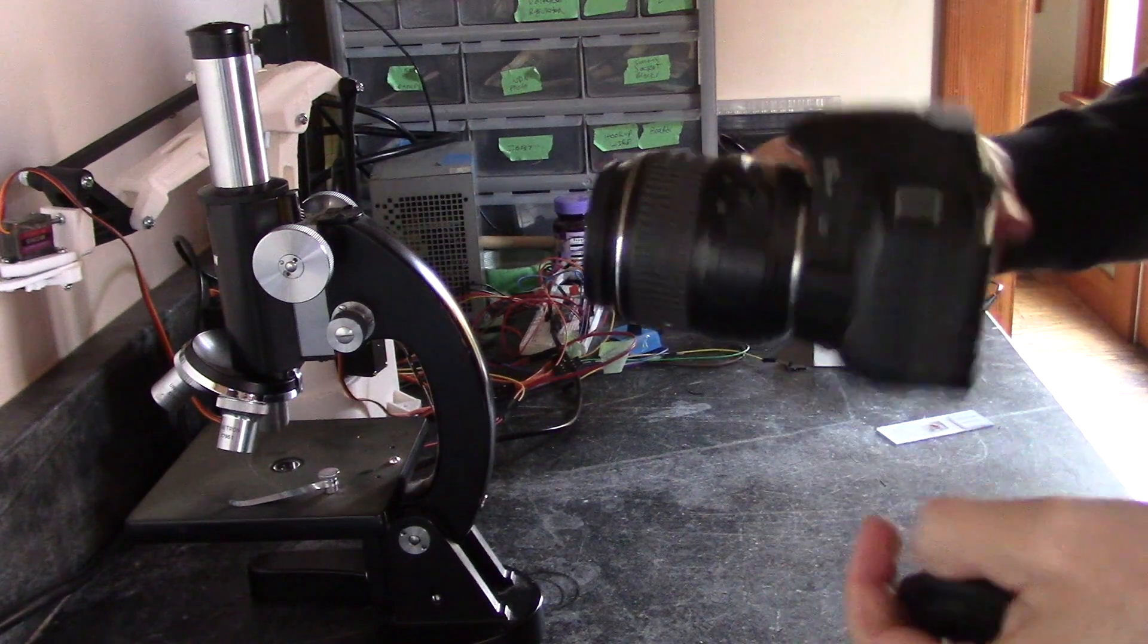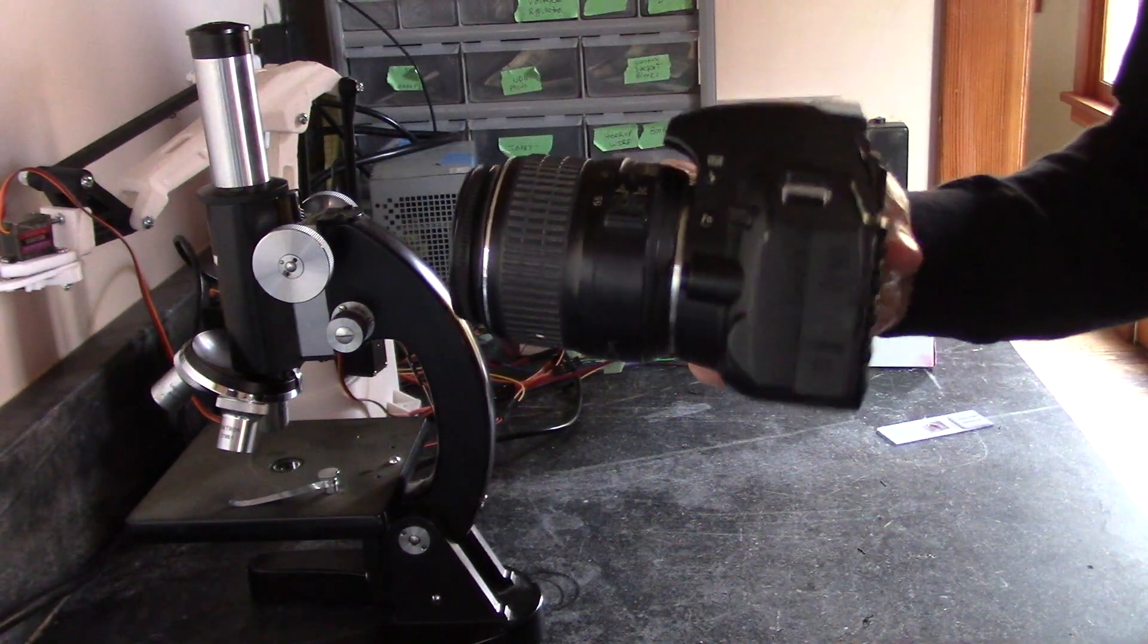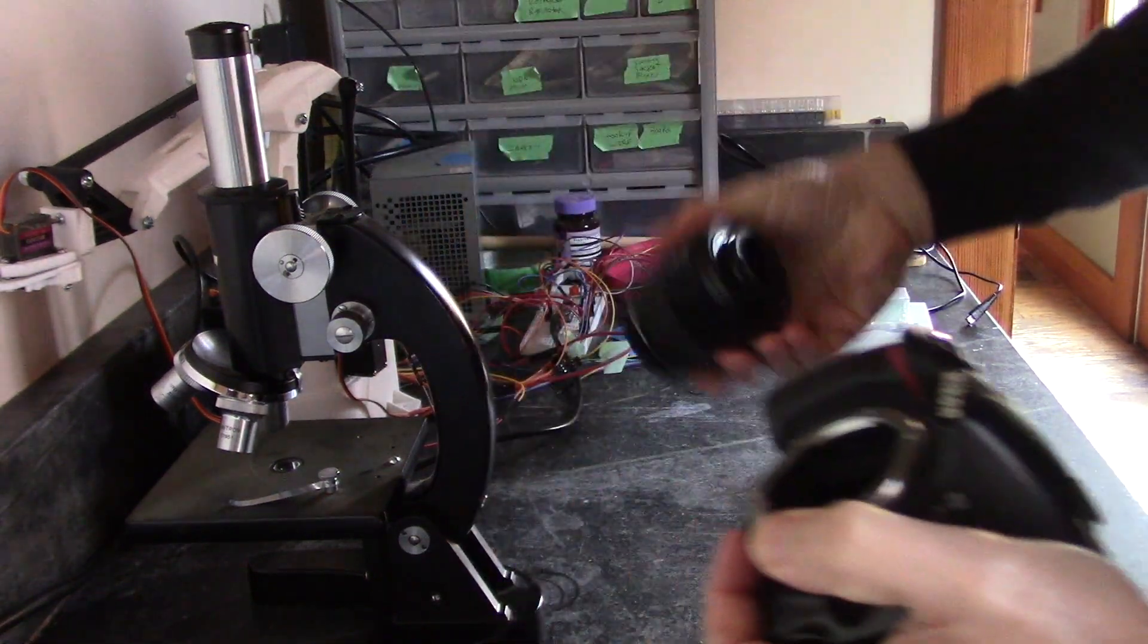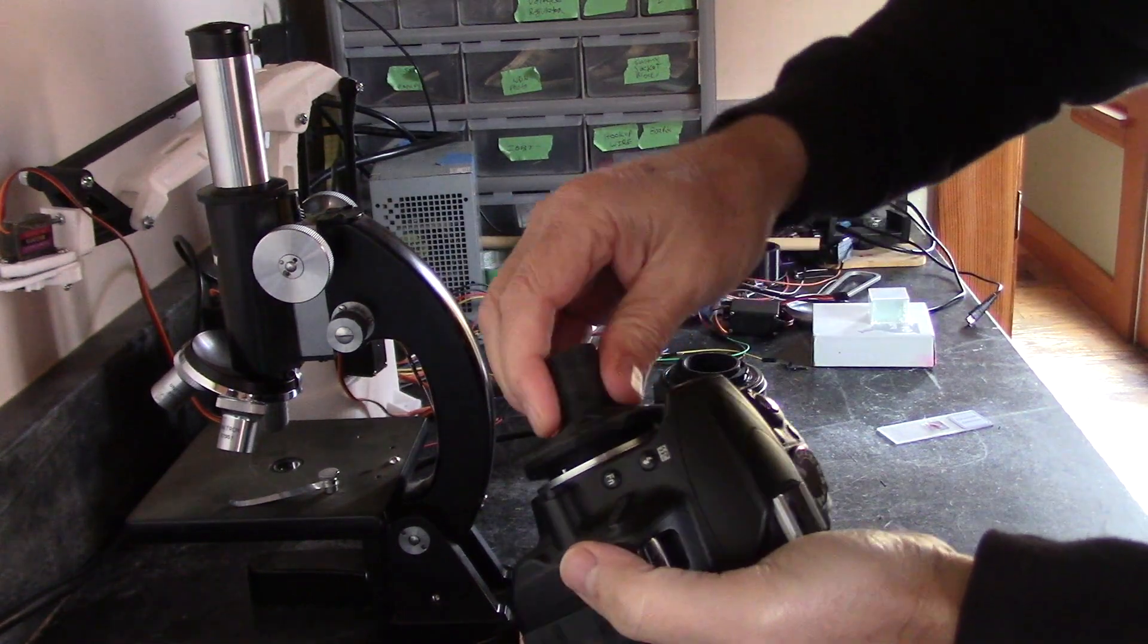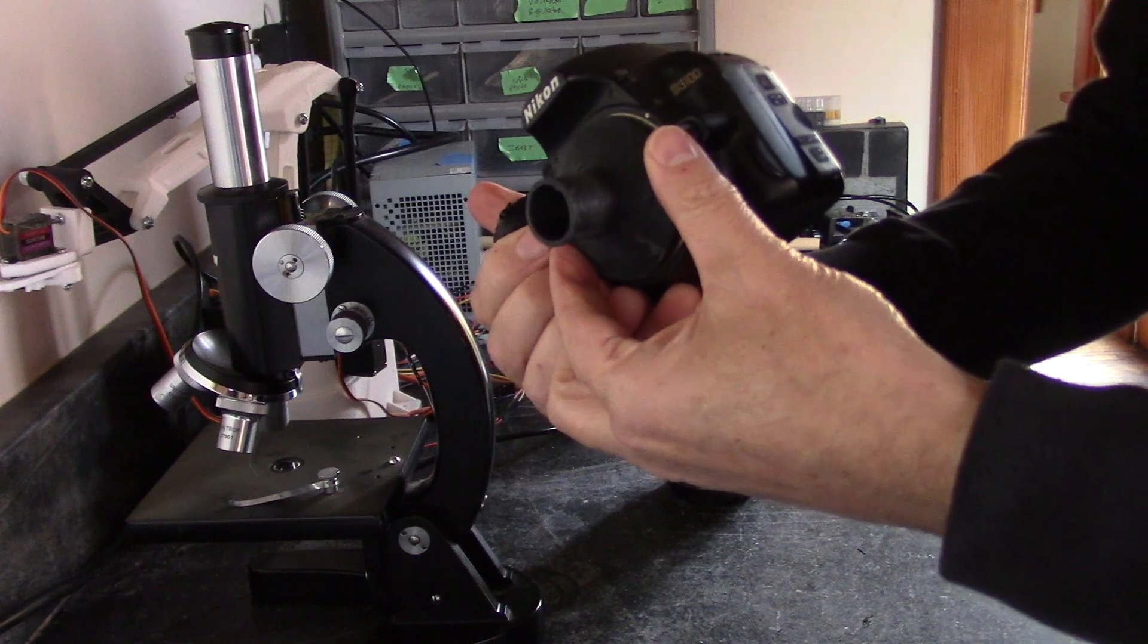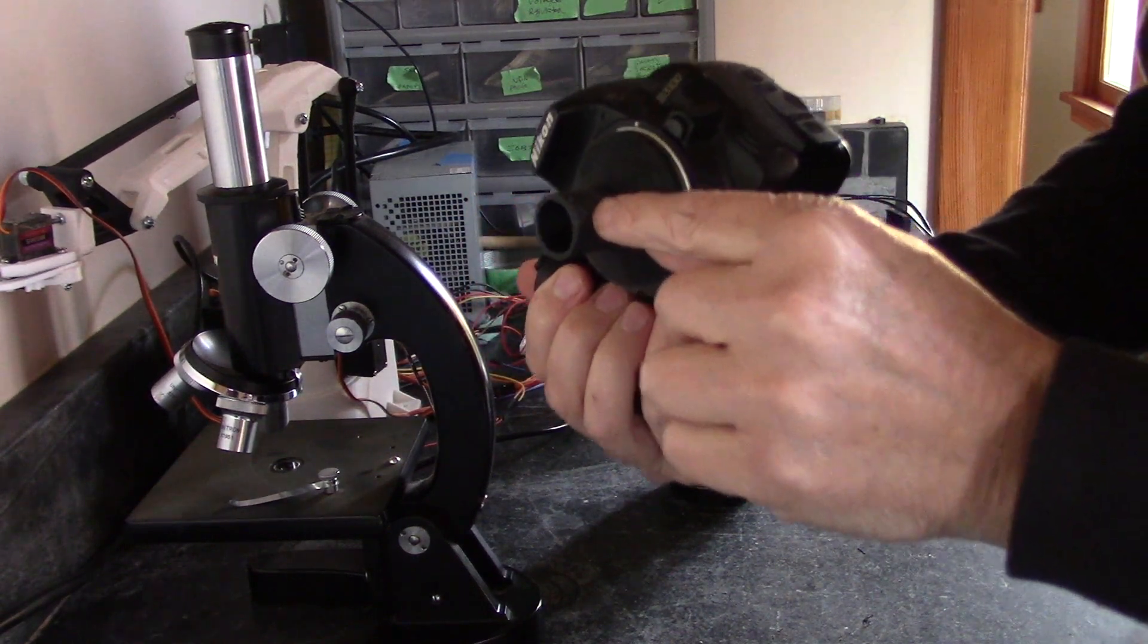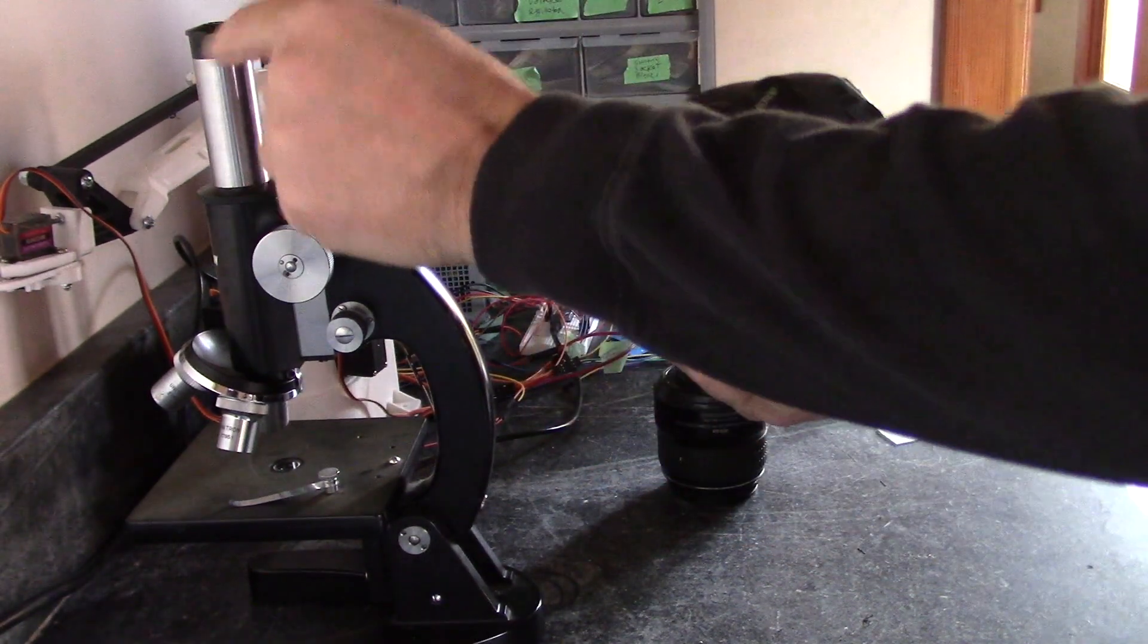And so this works by actually removing the lens on your camera. Let's see if I can find it, okay. And then it just snaps right in, alright. And then this is designed to go inside a 23mm eyepiece, which is what I have right here.